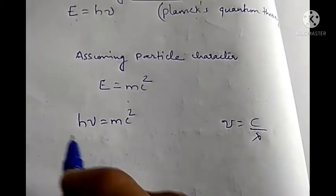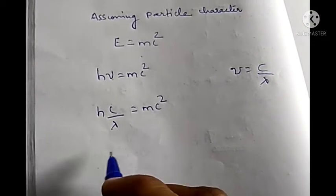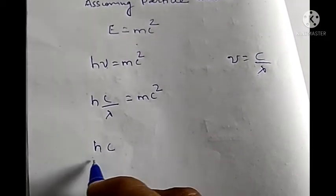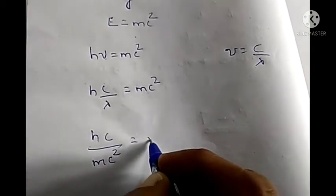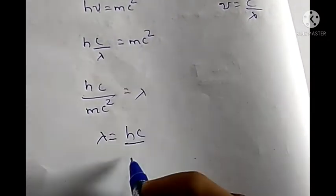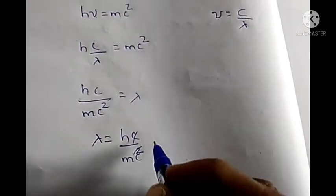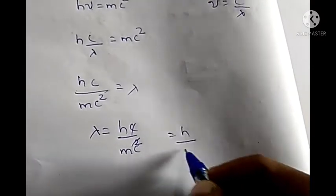We know that ν = c/λ. So instead of ν, we can write c/λ, and the equation becomes hc/λ = mc². Taking λ to one side and mc² to the other, we get hc/mc² = λ. We can write this as λ = hc/mc². Then we can cancel the c, so we get λ = h/mc.